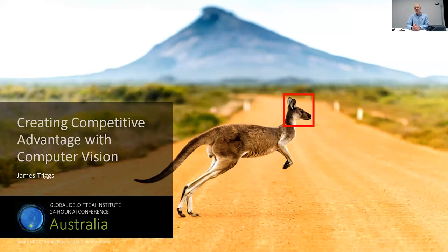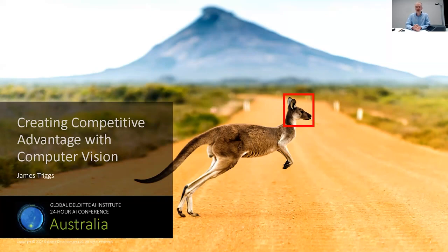I couldn't help myself when we had the title slide with the kangaroo on the front — I had to put the bounding box around the head of the kangaroo. This is actually another good example of a computer vision problem. These kangaroos in Australia are really hard to predict what they're going to do when they jump all over the place, including in front of cars. It's actually a real application — smart self-driving cars trying to figure out whether there's a kangaroo approaching that could jump in front of a car.